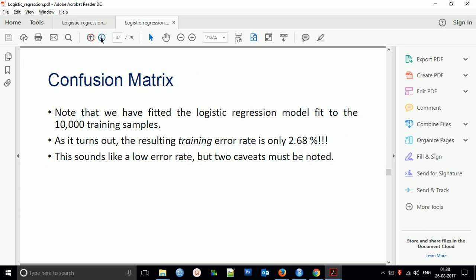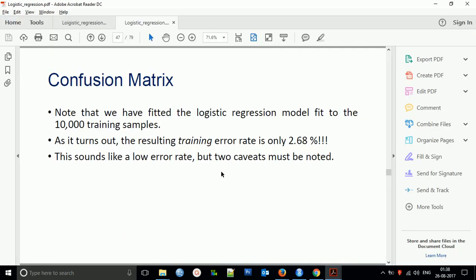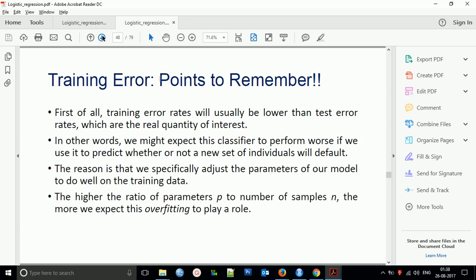Confusion matrix: the logistic regression model was fit to 10,000 training samples. The training error rate is 2.6%. This sounds like a low error rate. First point to remember: training error should be easily lower than test error. You might expect this classifier to perform worse on new data because we specifically adjusted parameters to fit the training data. The higher the ratio of parameters to number of observations, the more we expect overfitting.